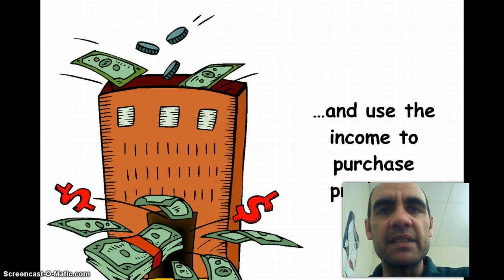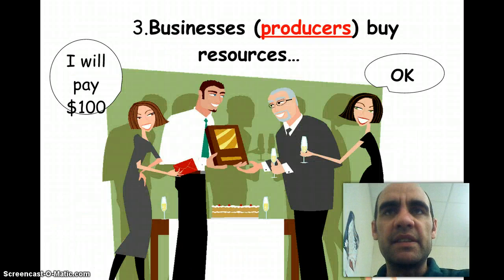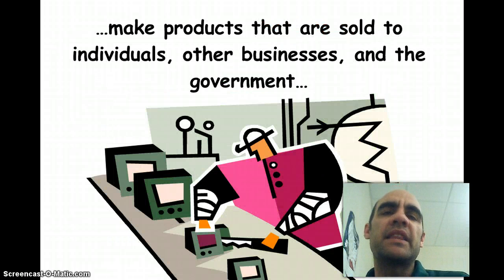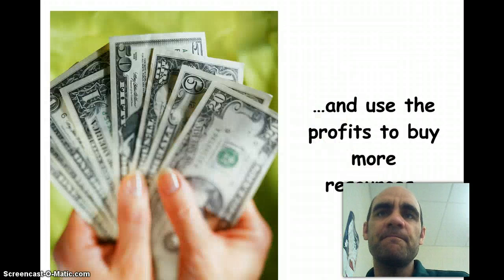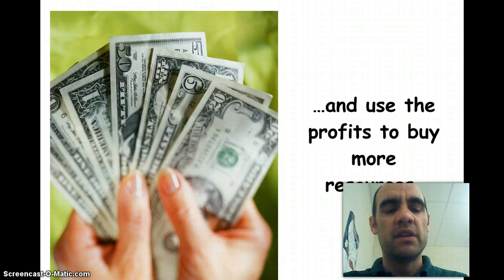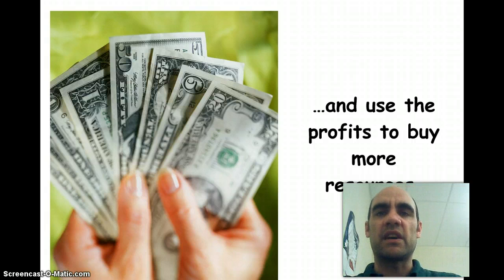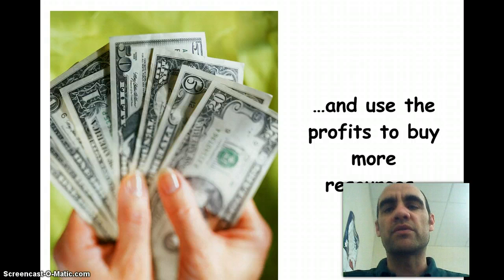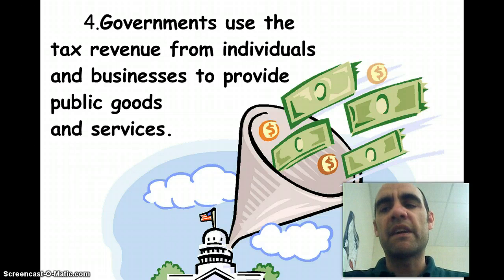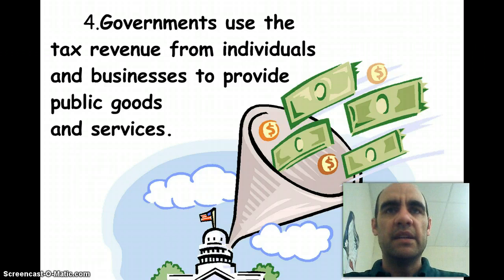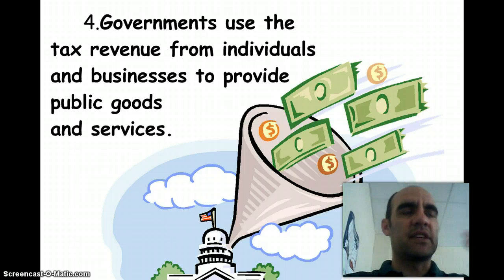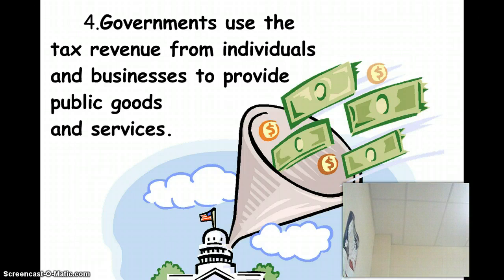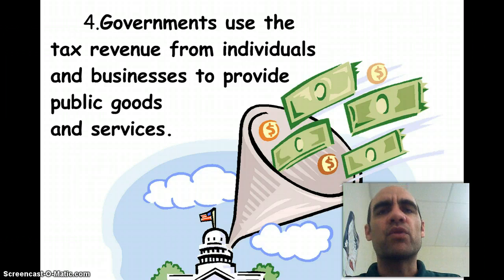Businesses — producers — buy resources and make products that are sold, and they use those profits to buy more resources. So when I go to Best Buy and buy a television, they use that money to buy more resources, including more stuff to sell and more people to work in their stores. The government taxes businesses on their profits and taxes the salary I make, and they use that to provide public goods and services — including things like roads and schools.